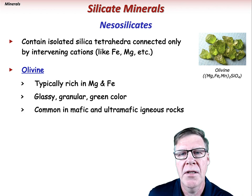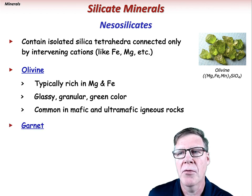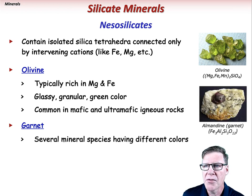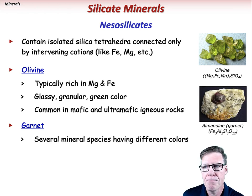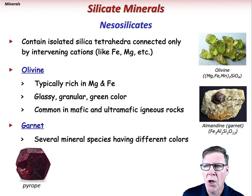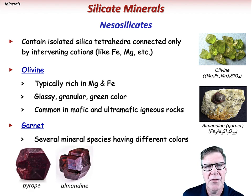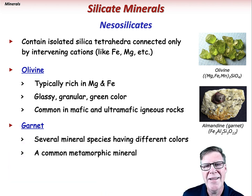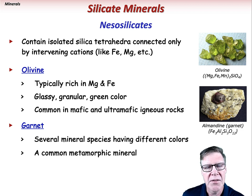Like olivine, garnet is a group of several minerals with similar physical properties and crystal form but slightly different chemical composition and color. The most common compositions are pyrope, almandine, spessartine, and grossular. Garnet is an important index mineral in metamorphic rocks, and its hardness makes it a great abrasive material.